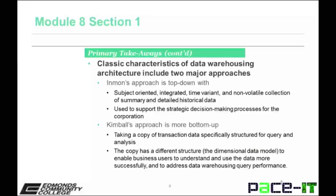Classic characteristics of data warehousing architecture include two major approaches. Inman's approach, which is top-down, subject-oriented, integrated, time-variant, and non-volatile, has summarized and detailed historical data, and is used to support the strategic decision-making processes for the corporation. Ralph Kimball's approach is more bottom-up — take a copy of transactional data, specifically structured for query analysis, and structure it into a dimensional data model which has facts and dimensions. This enables the user to understand and use the data more successfully and to address data warehouse query performance.